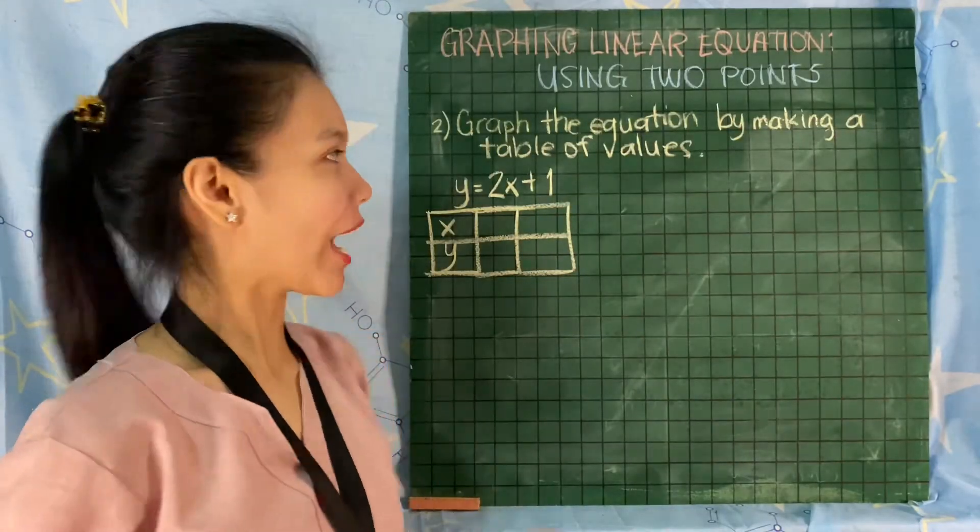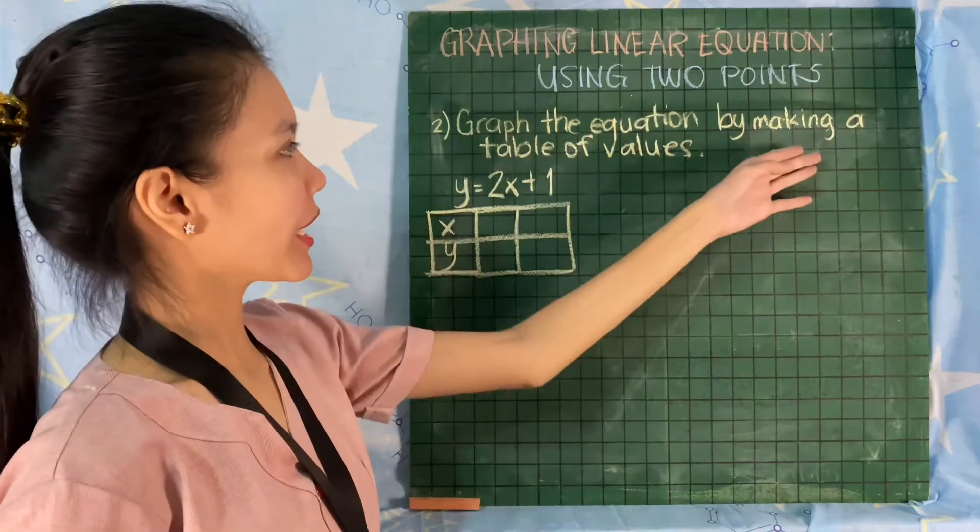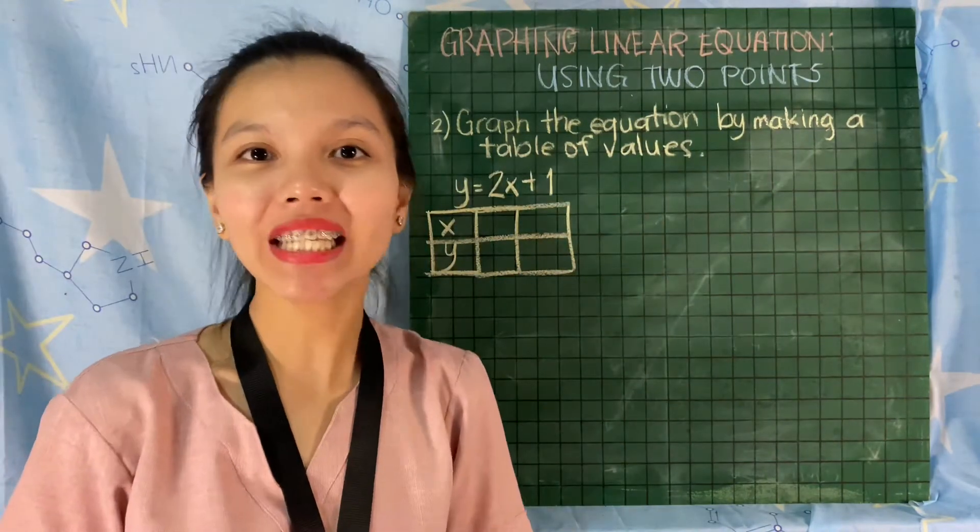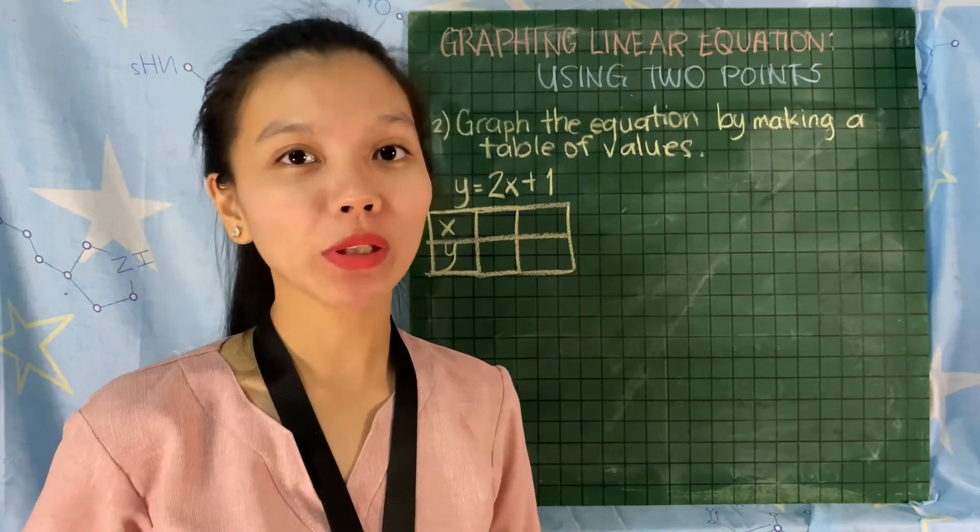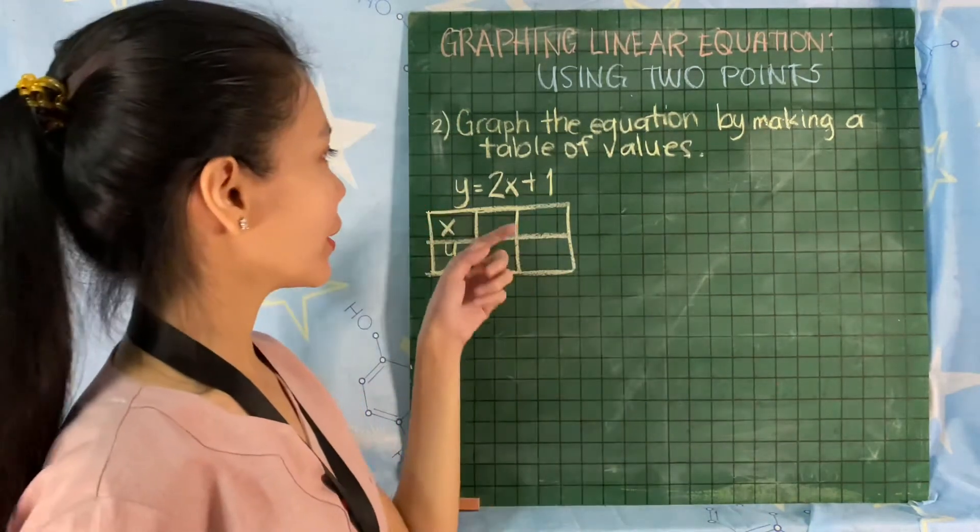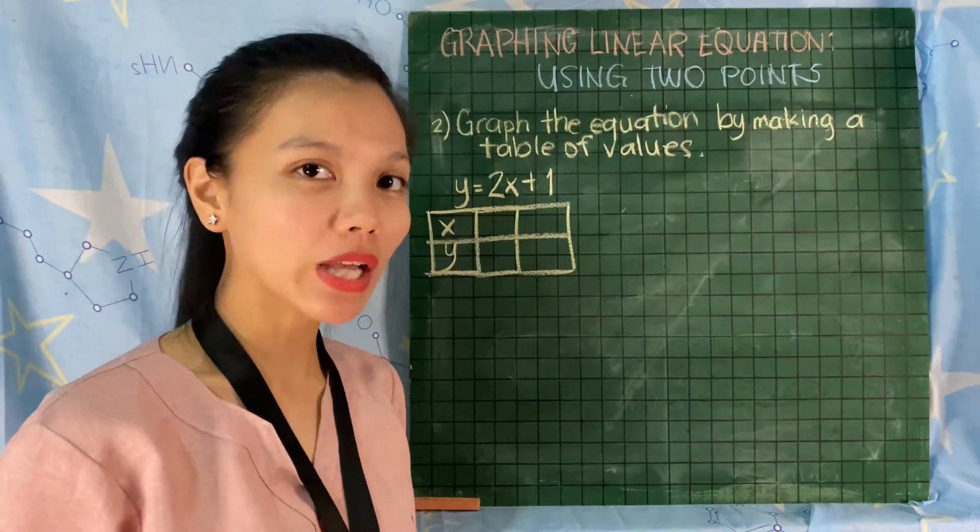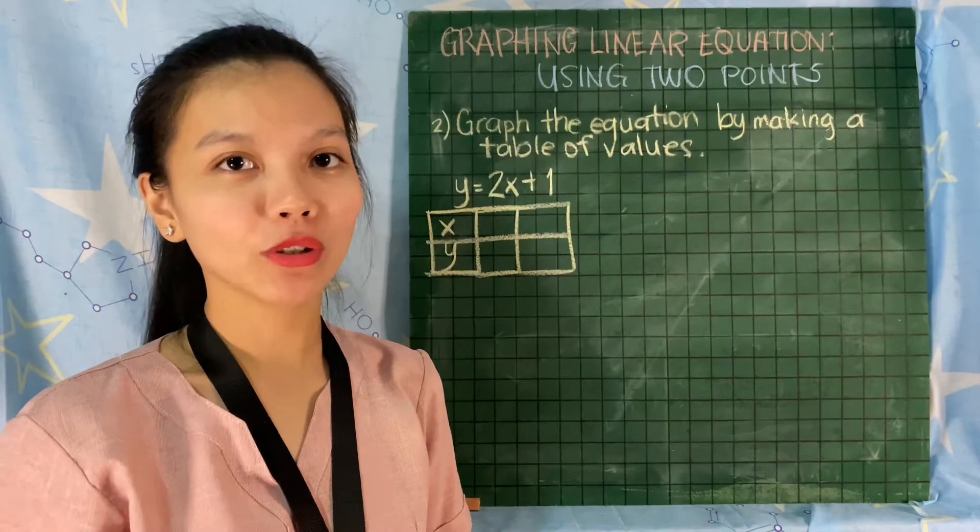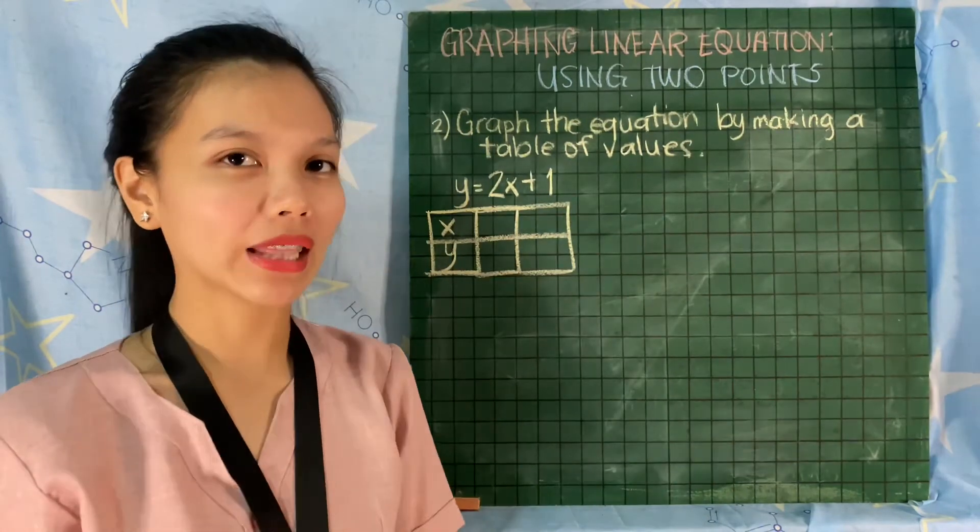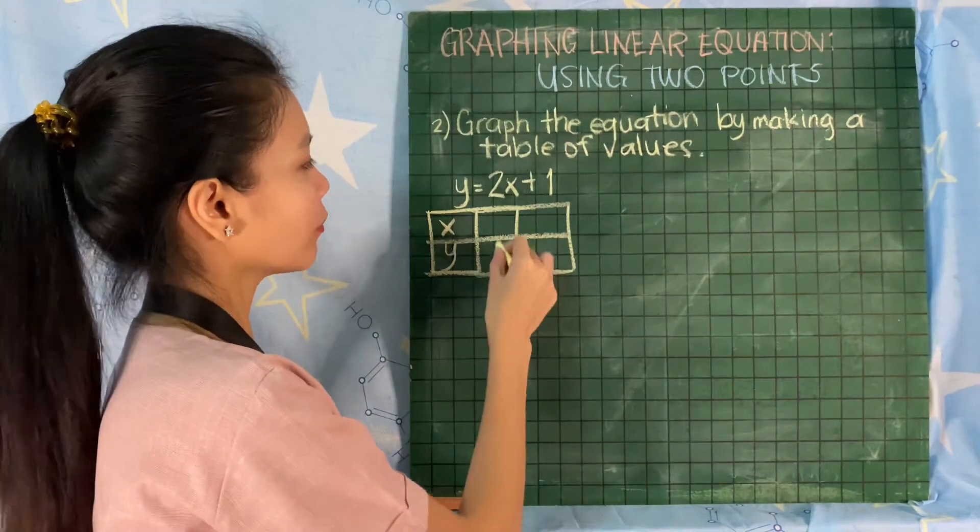For the second example, we have graph the equation by making a table of values. The two points are not given directly, so you are going to solve for them. The values of x are 1 and 2.